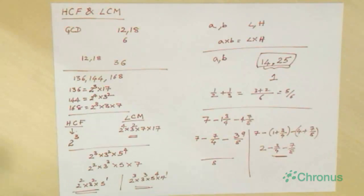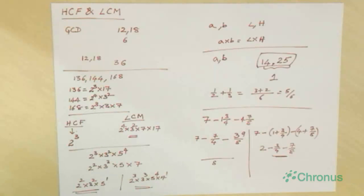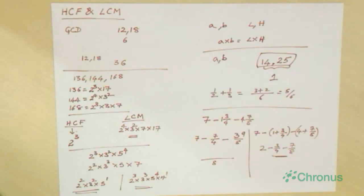This concludes the review of HCF and LCM, and also concludes the theory part of module 1 of this aptitude series. A few problems will be uploaded onto the portal as assignments — I suggest you solve them. There is also a forum in the mentoring portal; you can make use of it by discussing problems there, and our mentors will be actively involved. See you in module 2. Thank you.